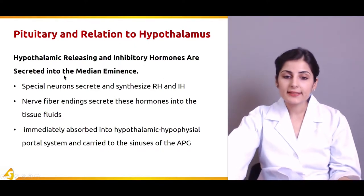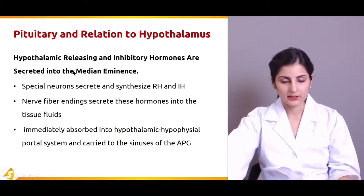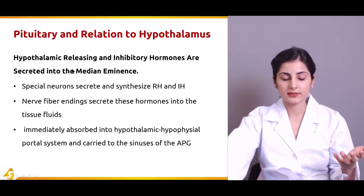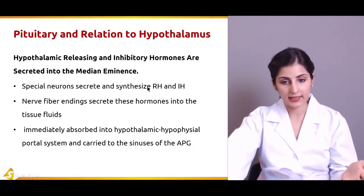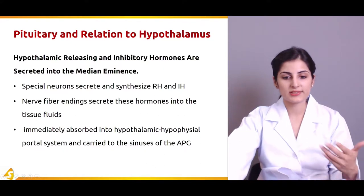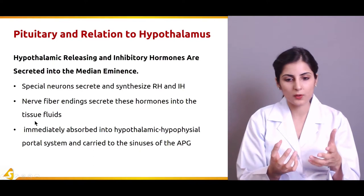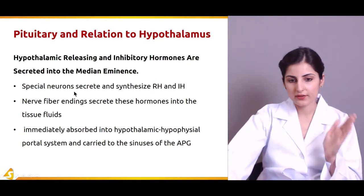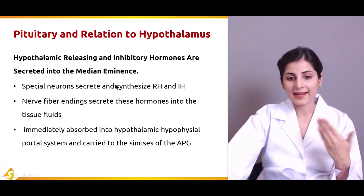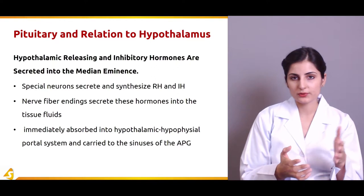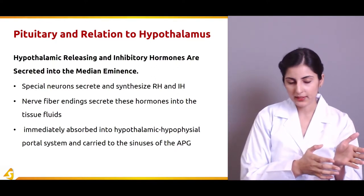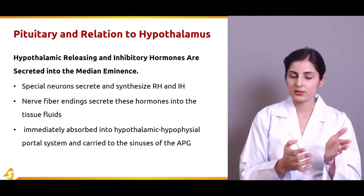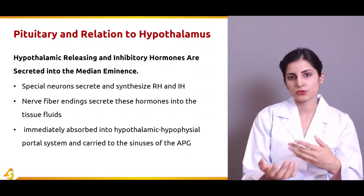The hypothalamic releasing and inhibitory hormones are secreted into the median eminence. Special neurons secrete and synthesize these hormones into the tissue fluids, which are then immediately absorbed into the portal system and carried to the sinuses of the anterior pituitary. This is the method by which the releasing and inhibitory hormones are transported from the hypothalamus to the anterior pituitary.